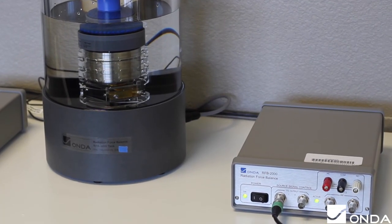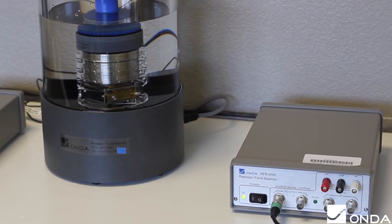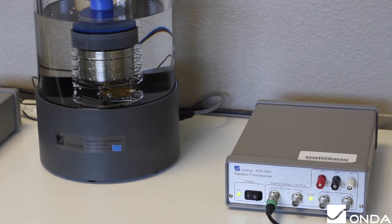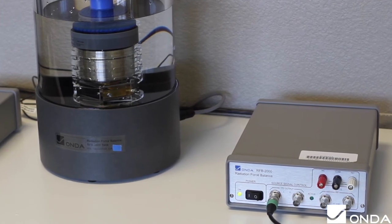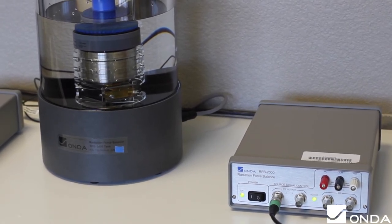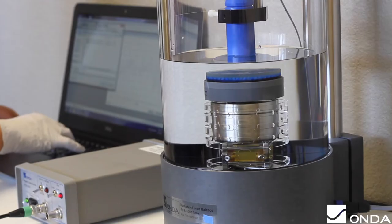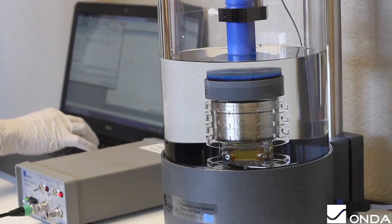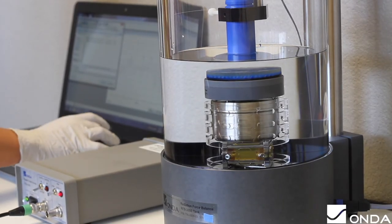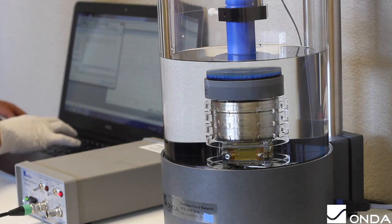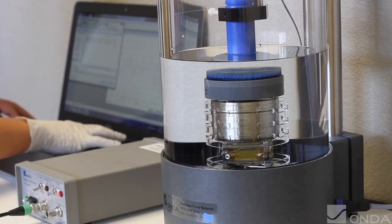The RFB-2000 is visually transparent for easy monitoring of the test transducer, making it easy to set up and use. The system provides convenient support for transducer mounting and requires no special membranes or acoustic gel. We recommend changing the water as often as daily and having the RFB professionally calibrated every two years.